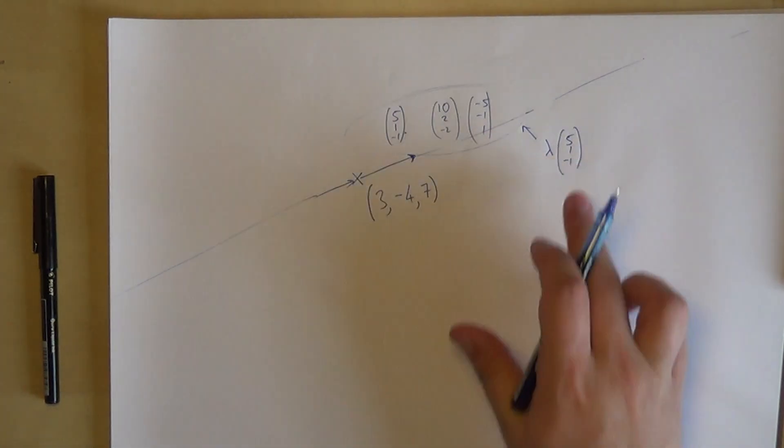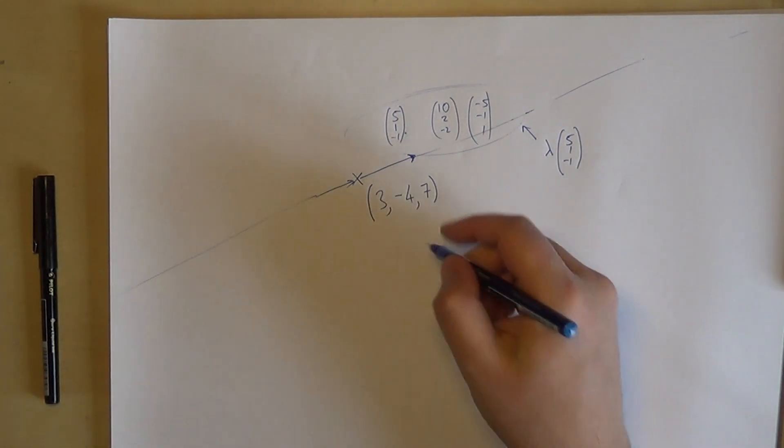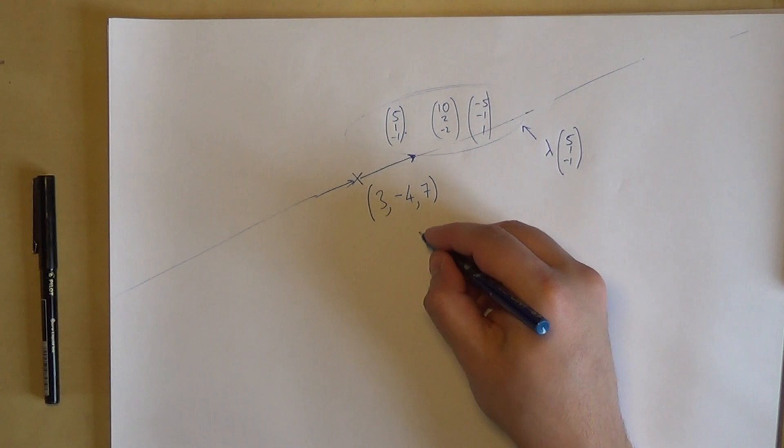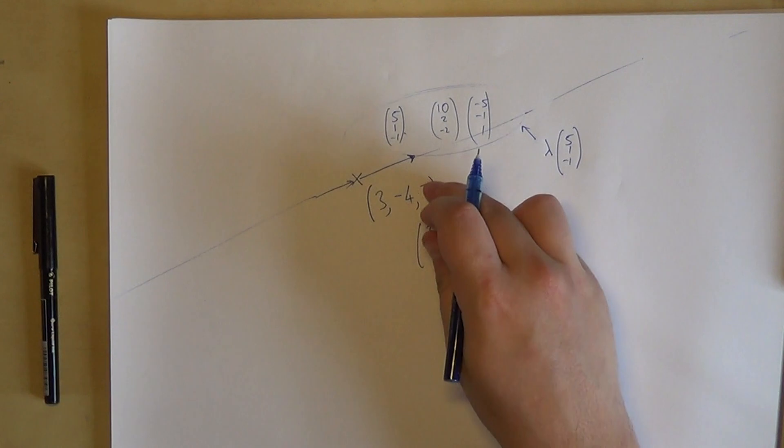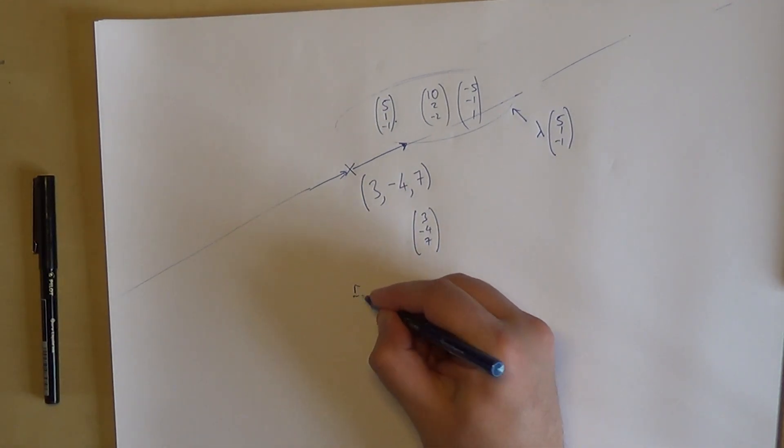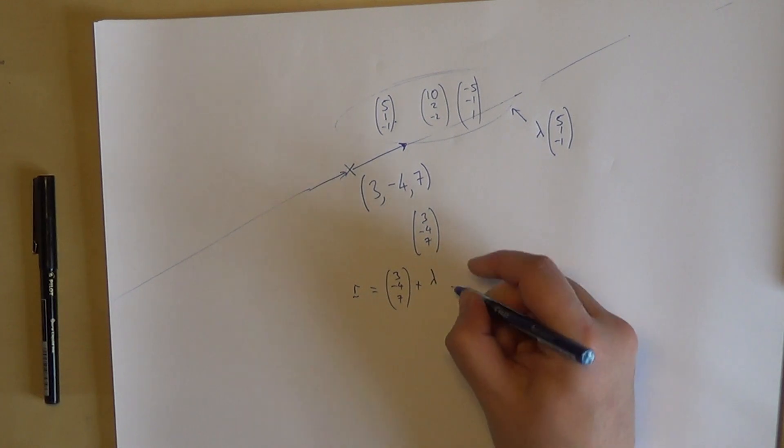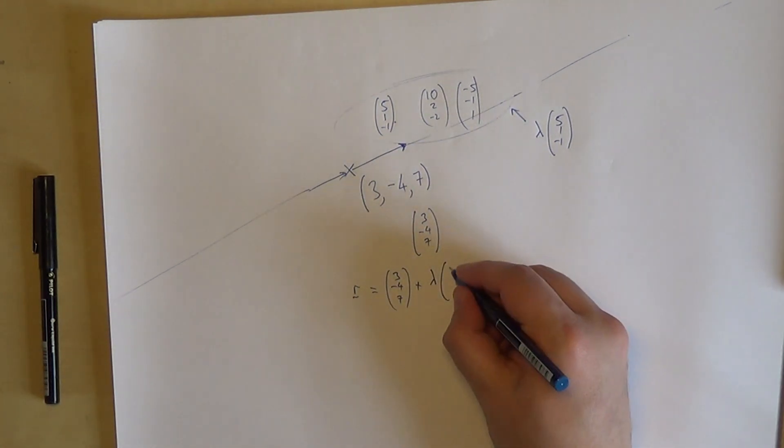However, we've now got a coordinate and a vector. Well, you've seen before that you can write coordinates as vectors. So if I start at the origin, this is 3, negative 4, 7. That's how you get there from the origin. So the line R is this place in space plus as many steps as you like, as many fractions of steps or proportion or any multiple of a step of this direction.